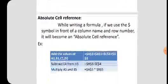The next type is absolute cell reference. While writing a formula, if you use the dollar symbol in front of a column name and row number, it will become an absolute cell reference. For example, to add A1, B1, C1: equal to dollar A dollar 1 plus dollar B dollar 1 plus dollar C dollar 1. Before each column name and row number, we use the dollar symbol.